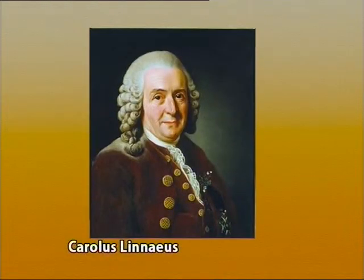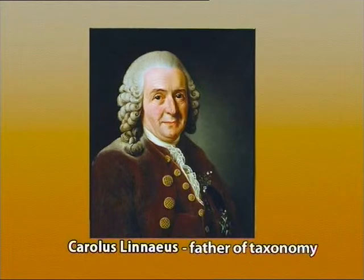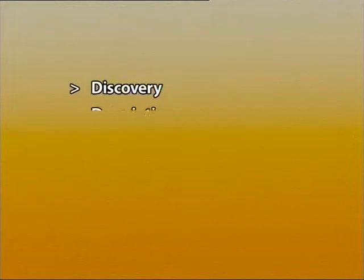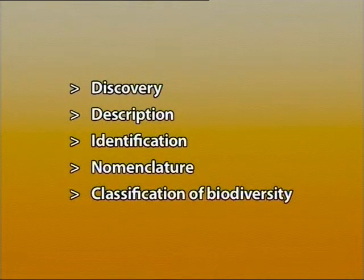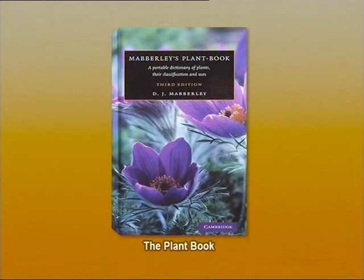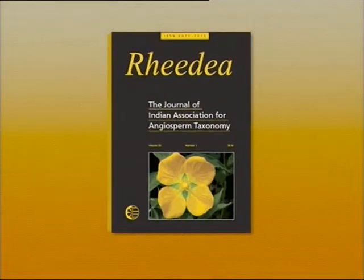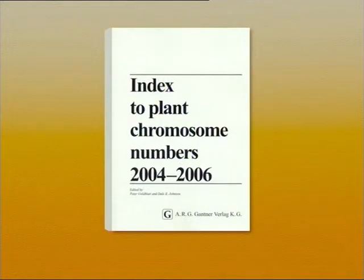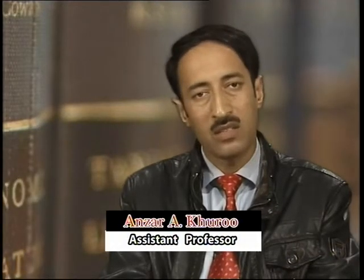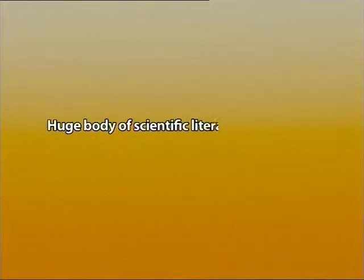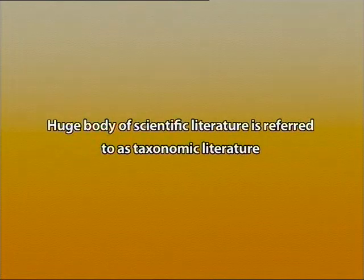Since the time of Carolus Linnaeus, who is regarded as the father of taxonomy, a lot of scientific literature has been published that deals with discovery, description, identification, nomenclature, and classification of biodiversity. Such a huge scientific literature, published in books, floras, journals, or even in the form of indexes, is an essential tool for the advancement of theory and practice of taxonomy. This huge body of literature is referred to as taxonomic literature.